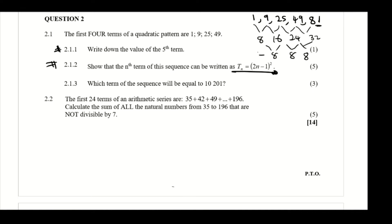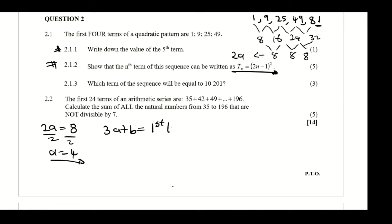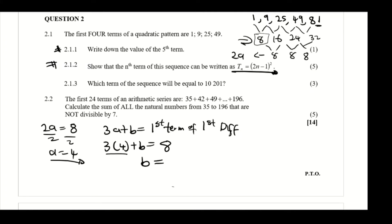The second difference equals 2a, so 2a = 8, which gives a = 4. Next, 3a + b equals the first term of the first difference. Substituting a = 4: 3(4) + b = 8. Solving, b = 8 − 12 = −4.